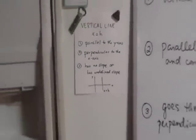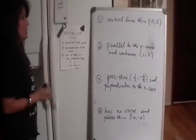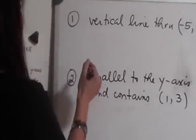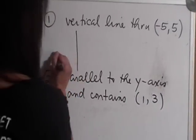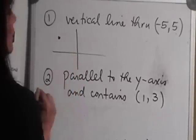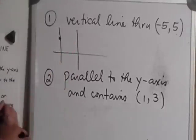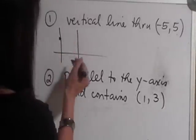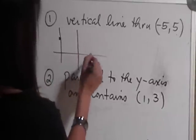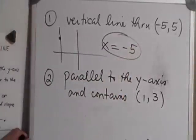Let's look at these problems and try to write the equations of these lines. The first one says I have a vertical line through negative 5, 5. So negative 5, 5 is somewhere here. I want to draw a vertical line through that point. Notice that this is a vertical line, and the x-coordinate or the x-intercept is negative 5. So the equation of this line is x equals negative 5.